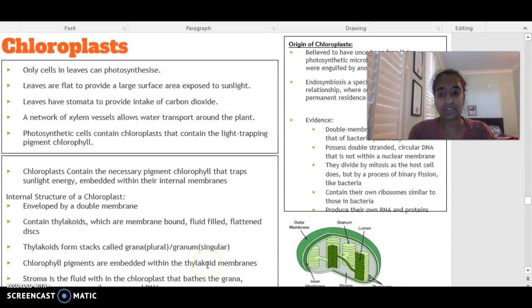There are also chlorophyll pigments that are embedded within these thylakoid membranes. The stroma is also a part of the chloroplast, which is basically this liquid that bathes around all of where the granum stacks are located. And that really just contains enzymes, ribosomes, and DNA throughout that fluid.